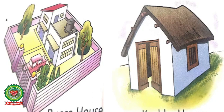Now see the pictures of different types of houses. Number 1: Pakka House — a house made up of bricks, cement and iron. Number 2: Kaccha House — a house made up of bamboo, mud and straw.